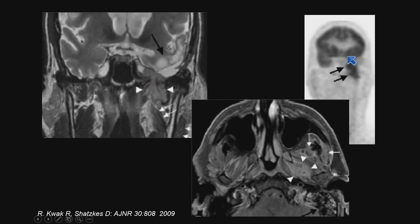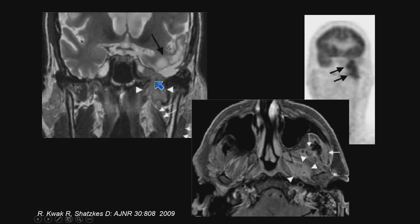You can see the lesion is an intracranial tumor which has actually extended or invaded the extracranial compartment — in this case, the masticator space. You can see the trigeminal cistern, or Meckel's cave, normal on the right, invaded on the left, adjacent to the foramen ovale.